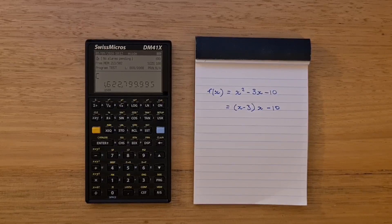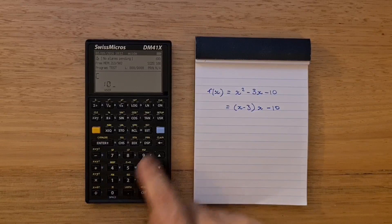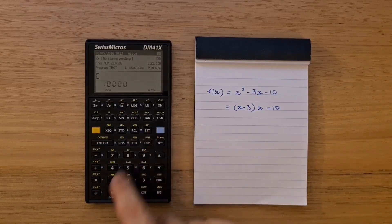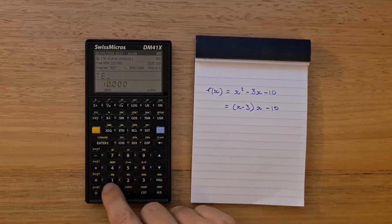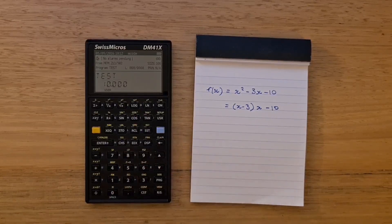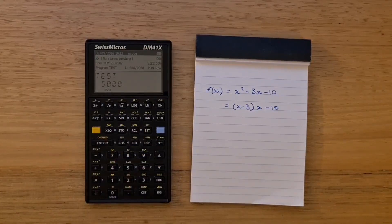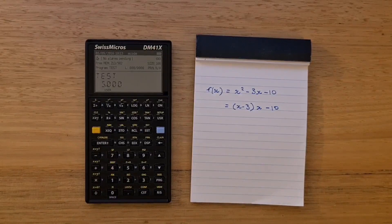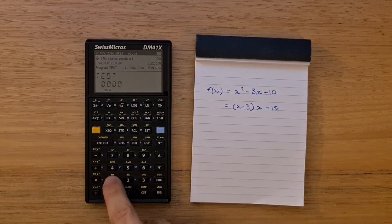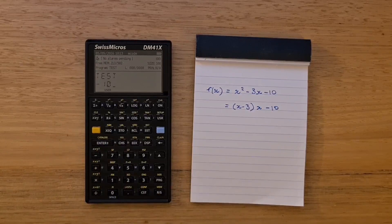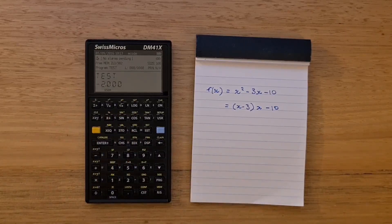To solve the function, we can enter initial estimates in x and y. Let's enter zero and 10. Then solve needs the program name in the alpha register. Now we can run the solve. A root is 5. Let's check for a negative root by entering 0 and negative 10 as our range. We can run solve again. There's another root at negative 2.